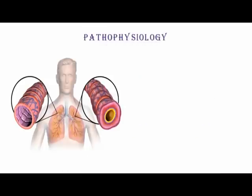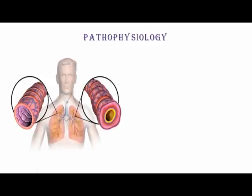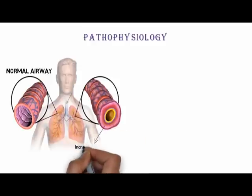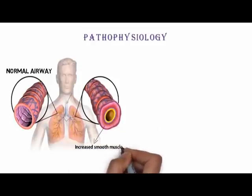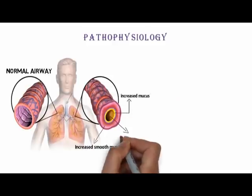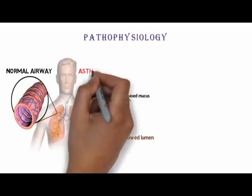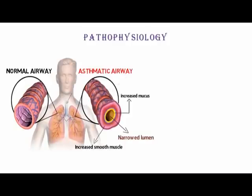The pathophysiology of asthma is quite complex. In this image, the trachea divides into right and left bronchus and then into bronchioles. On the left side is the normal airway, whereas on the right side you can see increased smooth muscle along with increased mucus inside the airway, which has caused narrowing of the airway lumen, thereby responsible for all the signs and symptoms of asthma.